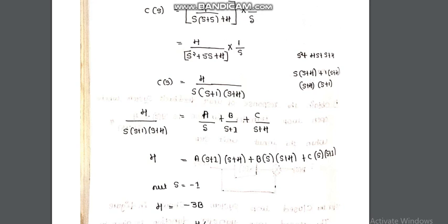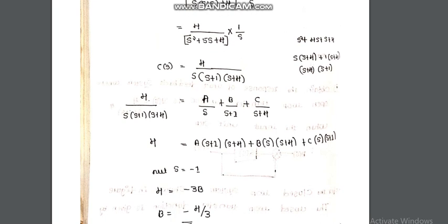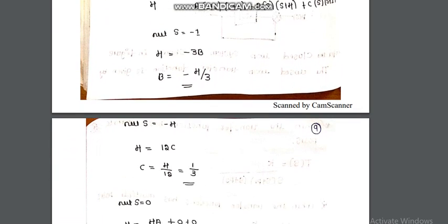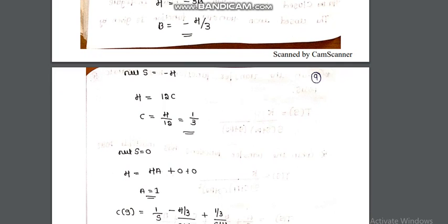To find B, substitute s = -1: the coefficients of A and C become zero, giving 4 = -3B, so B = -4/3. Substituting s = -4 gives 4 = 12C, so C = 4/12 = 1/3. Substituting s = 0 gives A = 1.